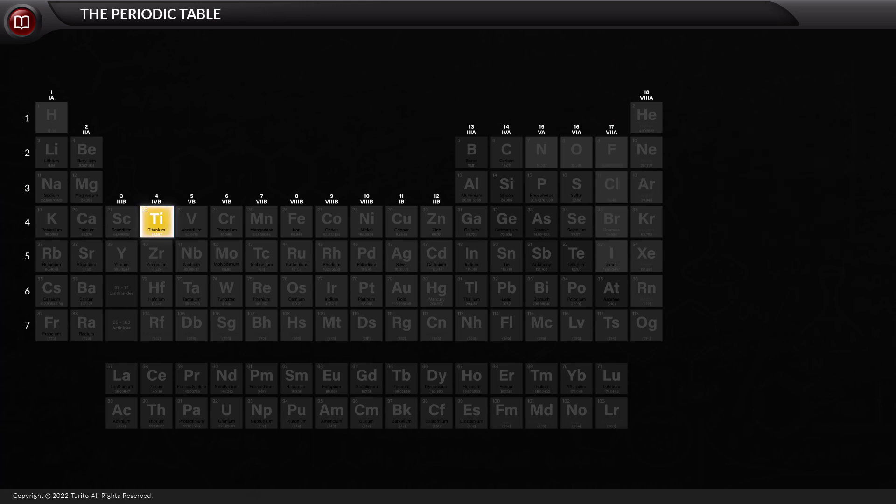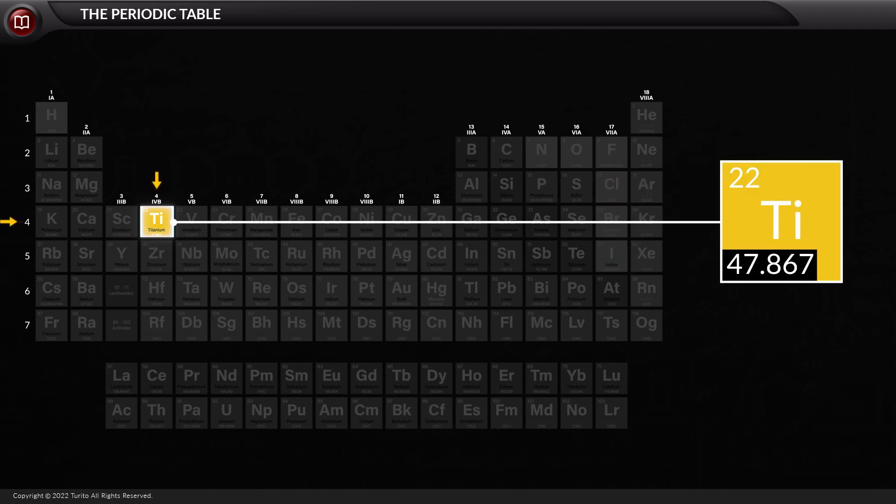Likewise, titanium, which is in row number 4 and period number 4, has an atomic number of 22, a mass number of 47.867, and the symbol Ti.